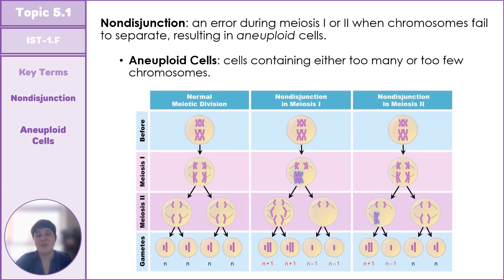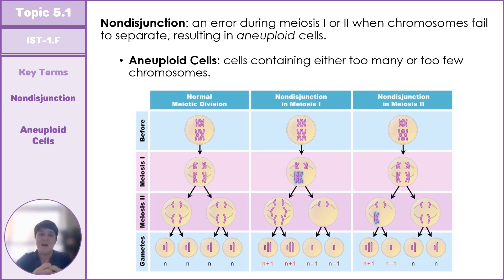One of the most well-known examples of non-disjunction is Down syndrome. When someone has Down syndrome they have an additional chromosome at chromosome 21, called trisomy 21 — three copies, like a tricycle. This causes a variety of different effects in the offspring. It is therefore very beneficial for cells to ensure spindle fibers are firmly attached before division occurs.